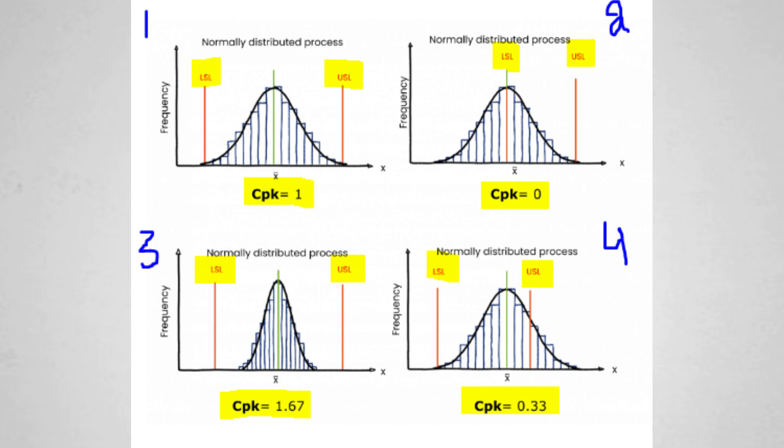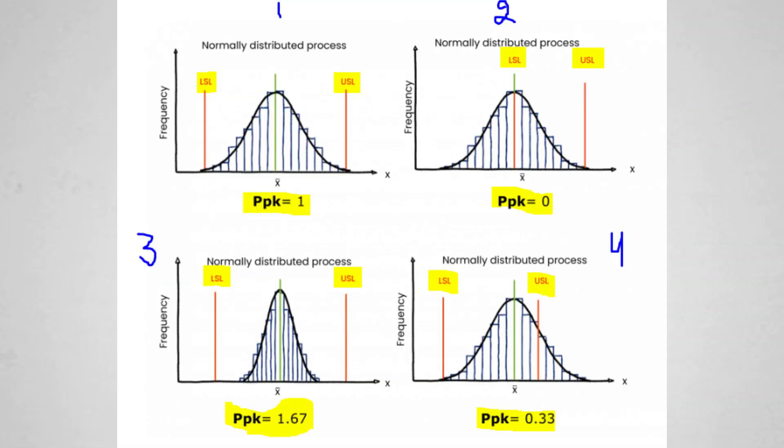In the third graph, CPK is 1.67 because the entire process is centered and very safe. In the fourth case, the location has shifted again, which is why CPK comes out to be 0.33. Similar graphs exist for PPK: PPK is 1 in the first case, 0 in the second, 1.67 in the third, and 0.33 in the fourth. So the data is the same and the calculation is almost similar for both.